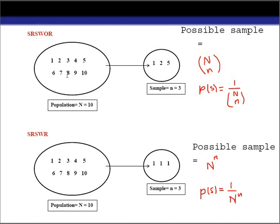The remaining 9 observations have equal probability of being selected into the sample. From draw to draw, the number of units is going to reduce from the population. Suppose unit 2 is selected at the second draw. After selection of 2 at the second draw, unit 2 is not going to be considered in the population at the third draw.